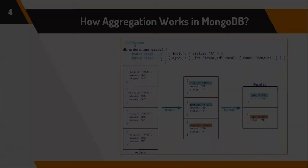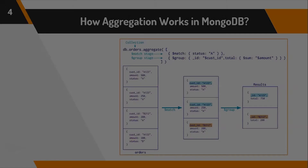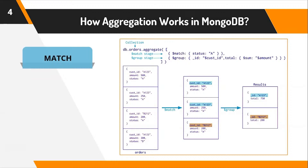Let us understand this with an example of how aggregation works in MongoDB. The match condition specifies only the related documents that you want to consider. For example, I have a collection named orders and I'm performing an aggregation operation. I've mentioned the match for status A. I have four documents for four different customer IDs with amount and status fields. I want to retrieve only those documents whose status is A, so I'm using the match command. The match command only retrieves those records with status A. We have three records that have the status field value as A.